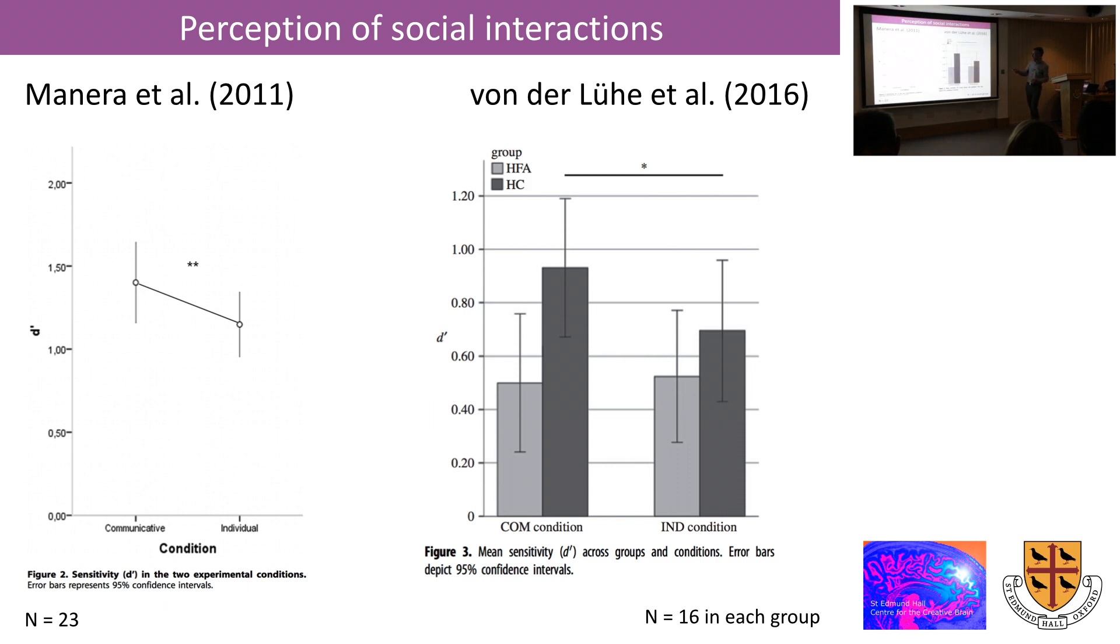And indeed in a subsequent follow-up study they did they found a similar relationship here in the dark bars, healthy control subjects but individuals, adults with high functioning autism didn't show that advantage for communicative interactions as compared to individual actions.